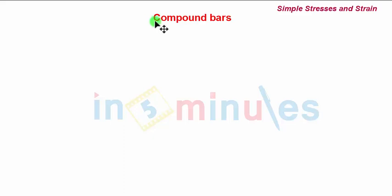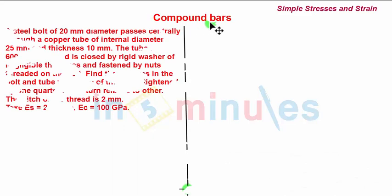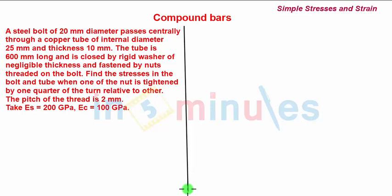Welcome to In 5 Minutes. We take a problem on compound bars. The problem statement is: a steel bolt of 20 mm diameter passes centrally through a copper tube of internal diameter 25 mm and thickness 10 mm. The tube is 600 mm long and is closed by rigid washers of negligible thickness and fastened by nuts threaded on the bolt.